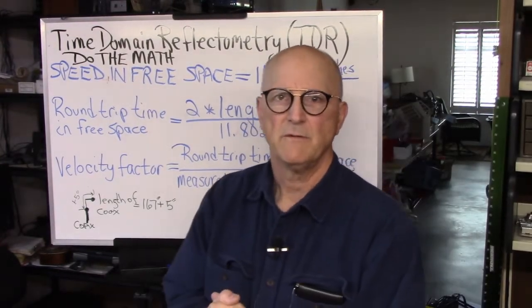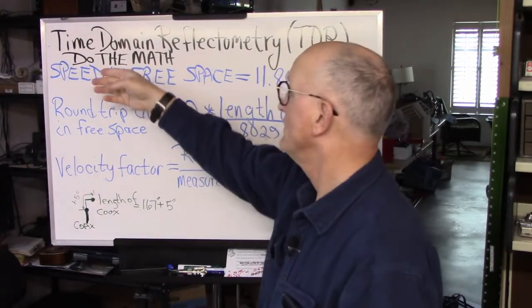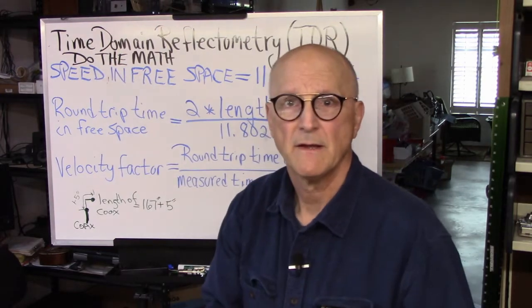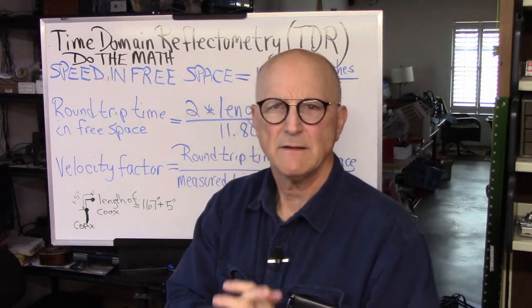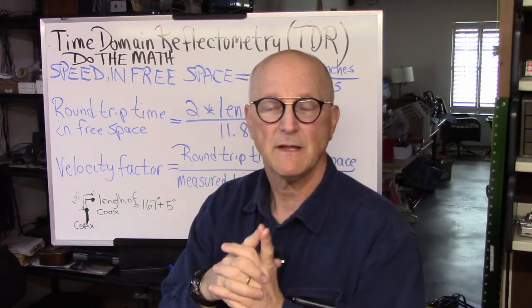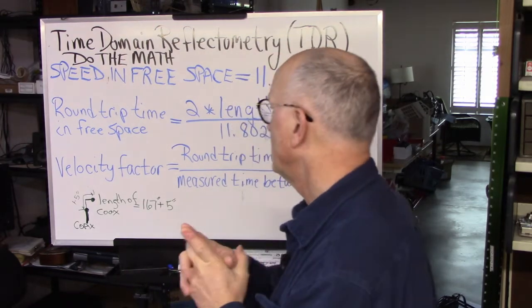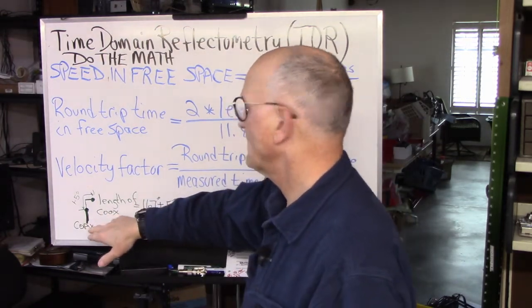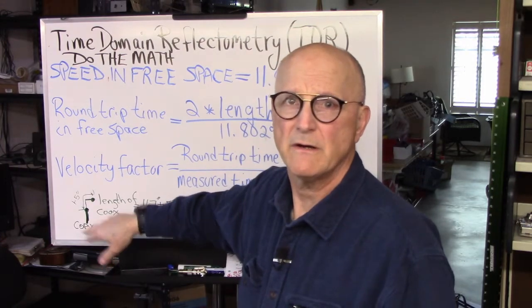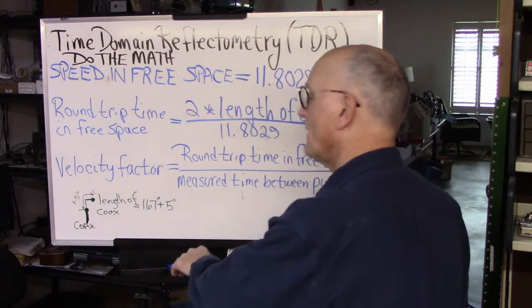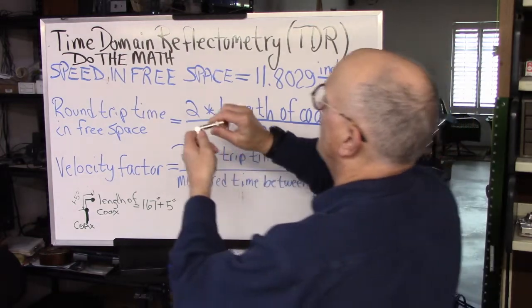Now that we have done the measurement, now it's time to do the math. To begin with, we have to make a little correction to the length of our coax. Yes, the transmission line is 167 inches long. However, if you remember, here's our test fixture.